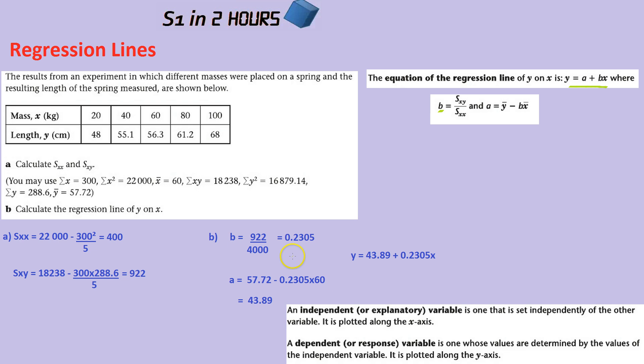With that b which we've just worked out, we can then work out a by timesing b by the mean of x, which thankfully they've given to us. If they hadn't given it to us, we'd have to add it all up and divide by five. To finish that off, a equals the mean of y take away the answer we just worked out, which is 57.72, the mean of y, take away that answer which is 43.89. We finally put our a and b into our equation up here, y equals a plus bx, and we have our regression line.